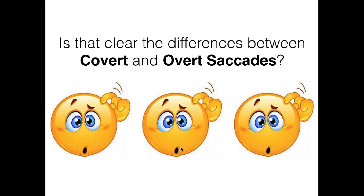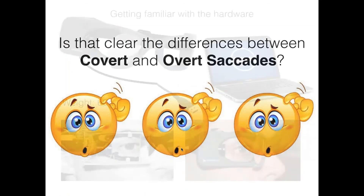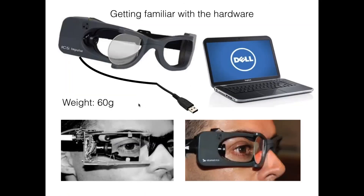Look here — the patient is moving the head, moving the head to the right, the head is still moving, and there's a saccade — and the head is still moving. That is a covert saccade. This saccade you didn't see with the naked eye, but the video head impulse test can show us that. So is the difference between covert and overt saccades clear? If not, we'll go through it in the questions.